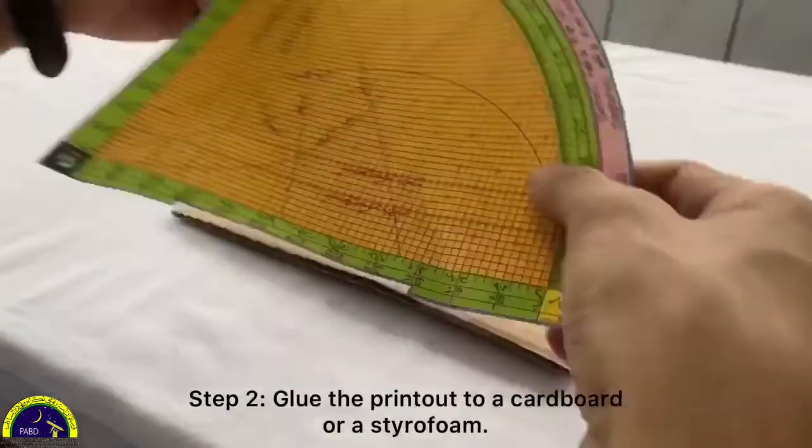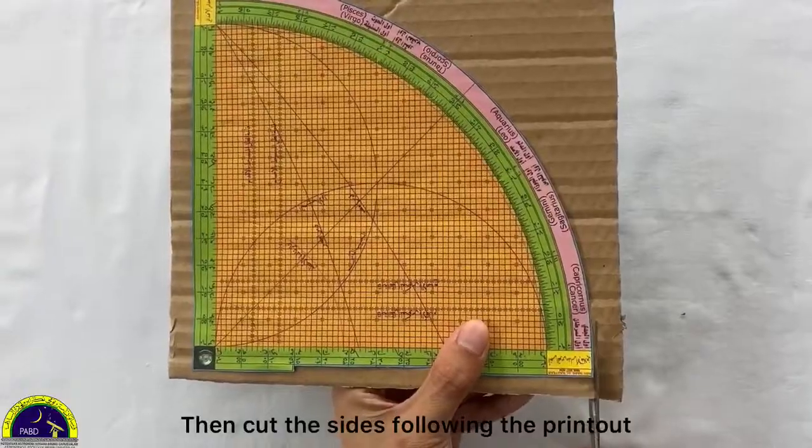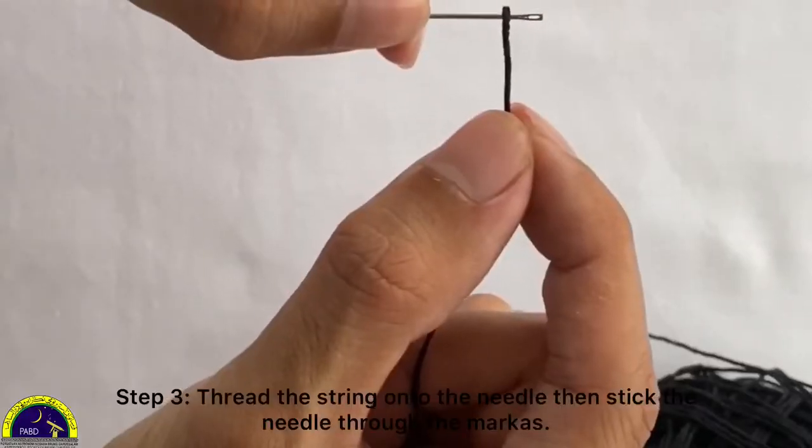Step 2: Glue the printout to a cardboard or a styrofoam. Then cut the sides following the printout. Step 3.